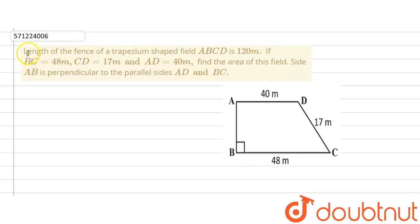The given question says that length of the fence of a trapezium shaped field ABCD is 120 meter. If BC is equals to 48 meter, CD is equals to 17 meter and AD is equals to 40 meter, find the area of this field. Side AB is perpendicular to the parallel sides AD and BC.